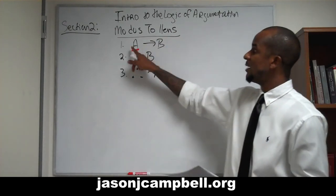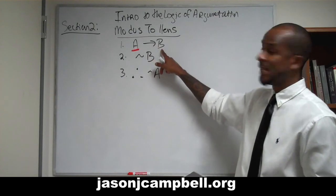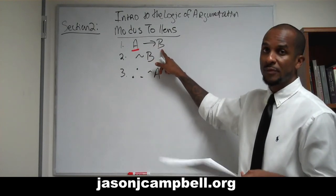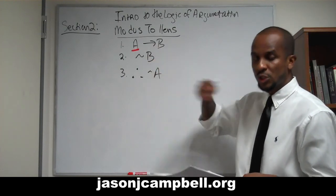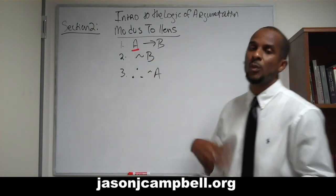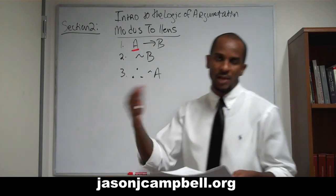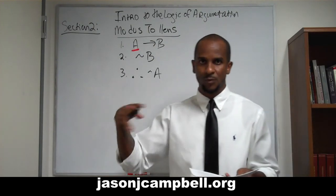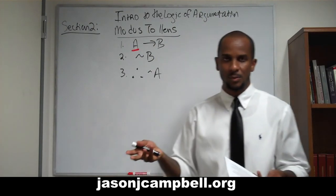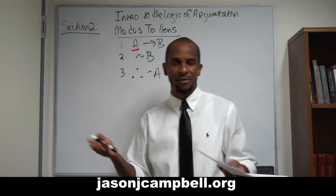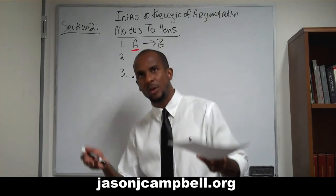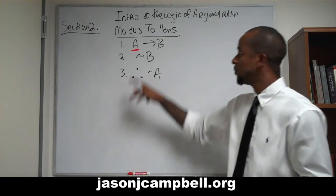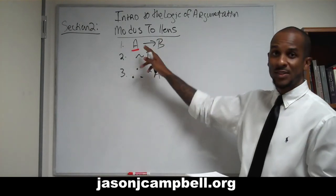Modus tollens says if A then B. Modus ponens — and you should start to commit these to memory — the way I always committed when I first started was to keep a simple relationship: if I jump, I will fall. You can't forget that. If I jump, I fall. So it's exactly the same.